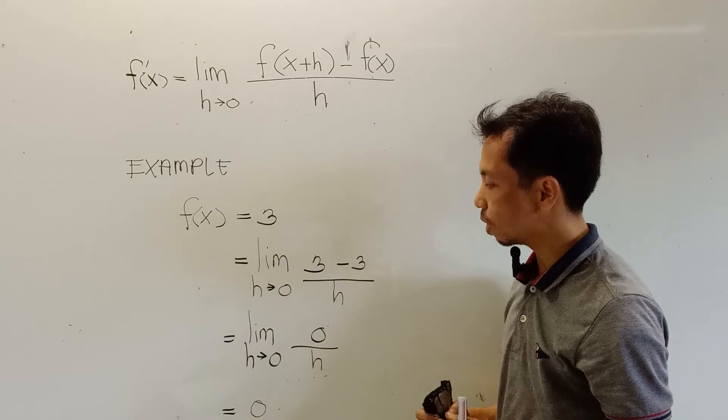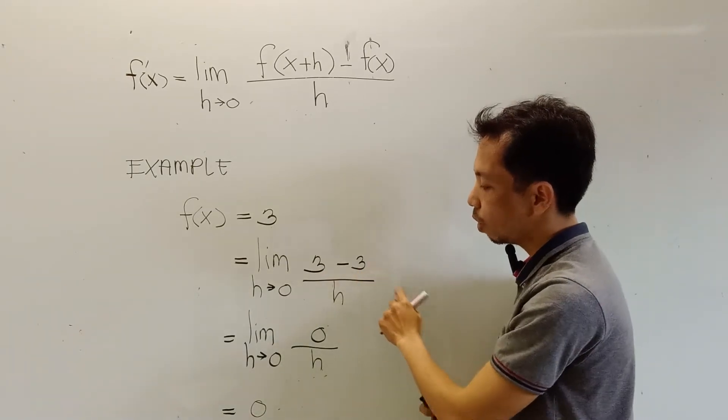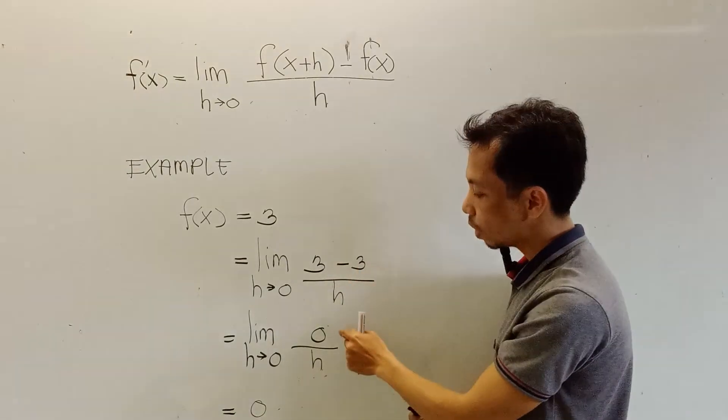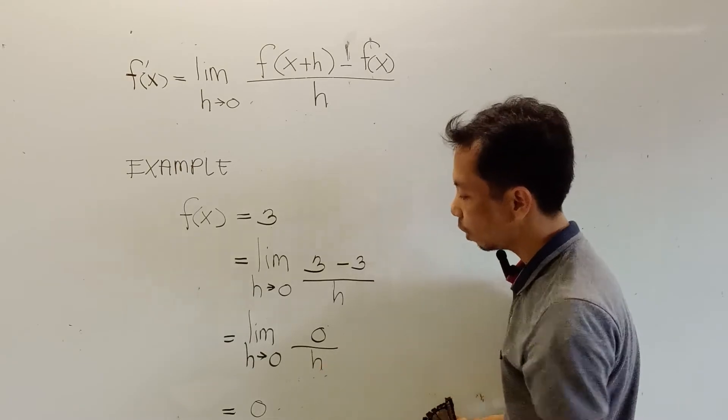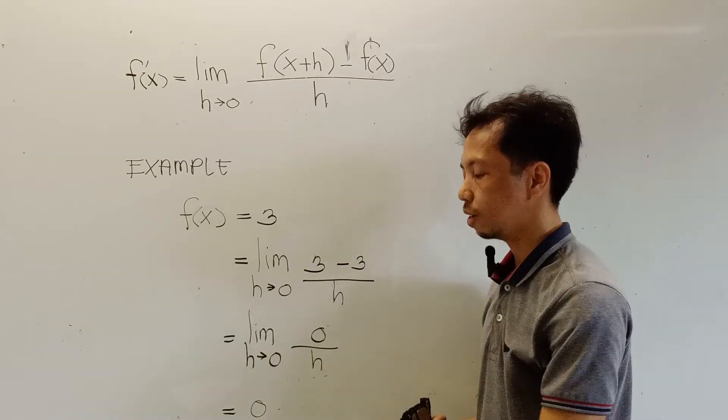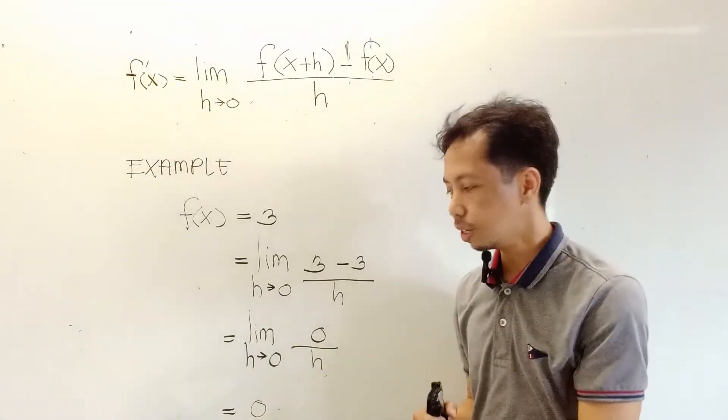Alright, so simplifying this one, we have 3 minus 3 all over h. 3 minus 3 is 0, just copy the h, then simplify. 0 divided by h is 0.